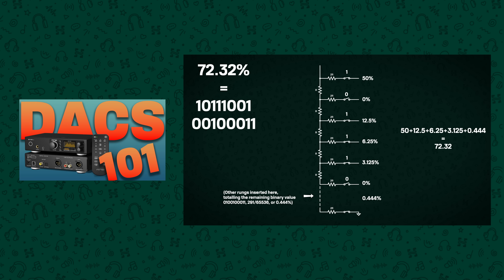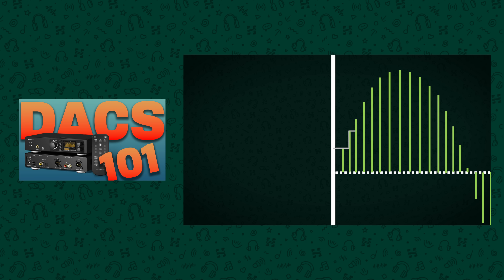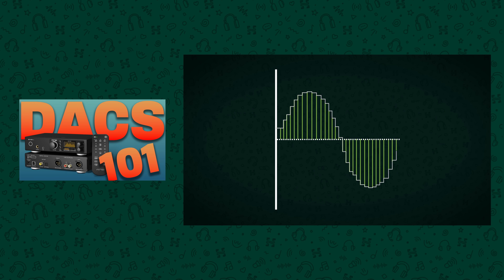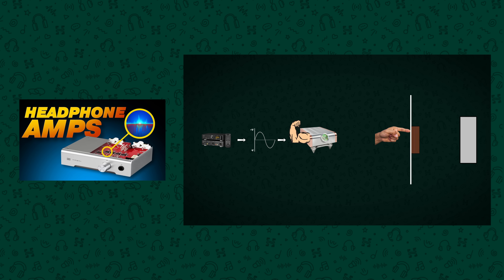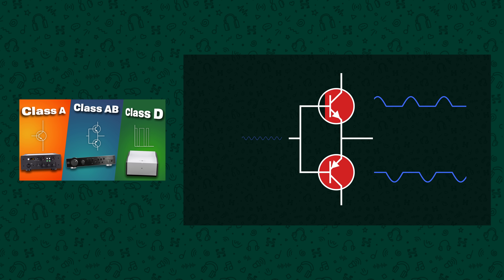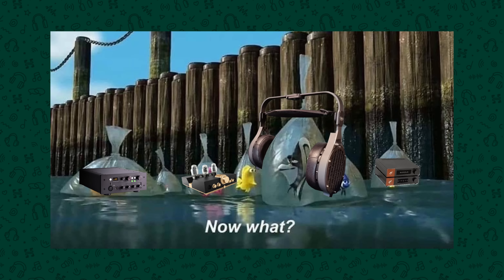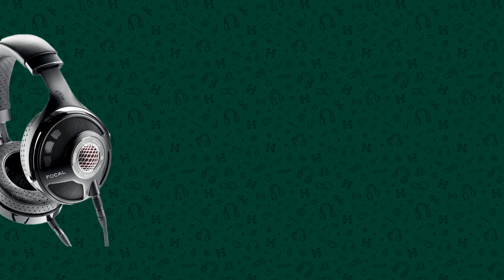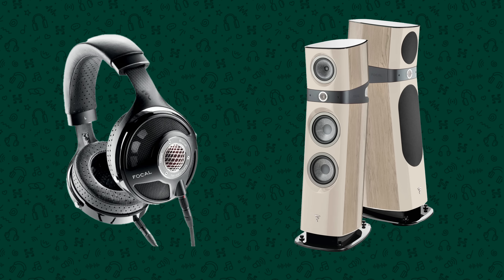In the previous parts of our Explained series we've talked through how digital audio works, how DACs convert digital audio to analogue, why you need an amplifier, how they work and what separates different classes of amplifier. But there's one very important thing that we've not talked about yet and that is how you get sound from a headphone or speaker.